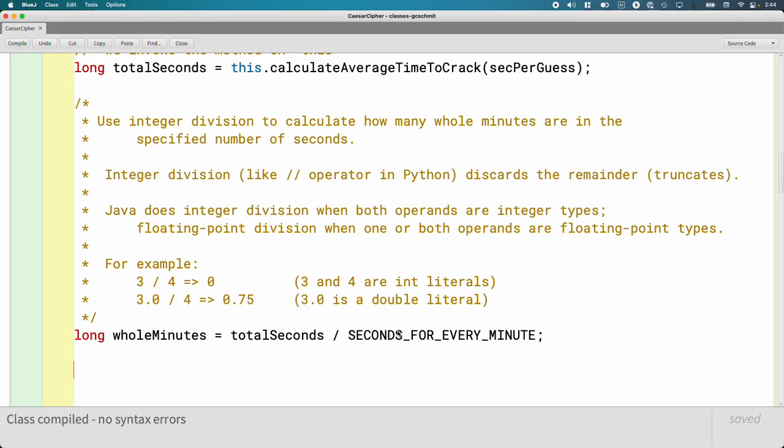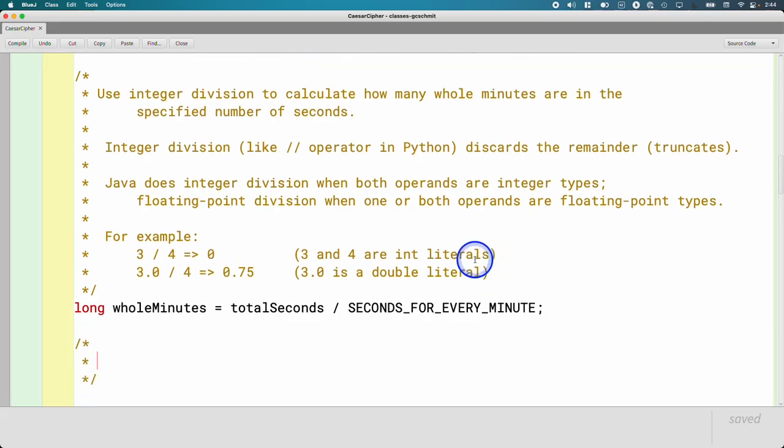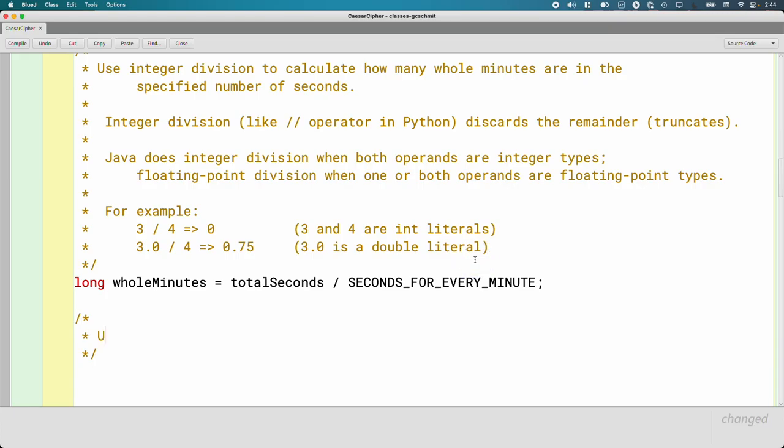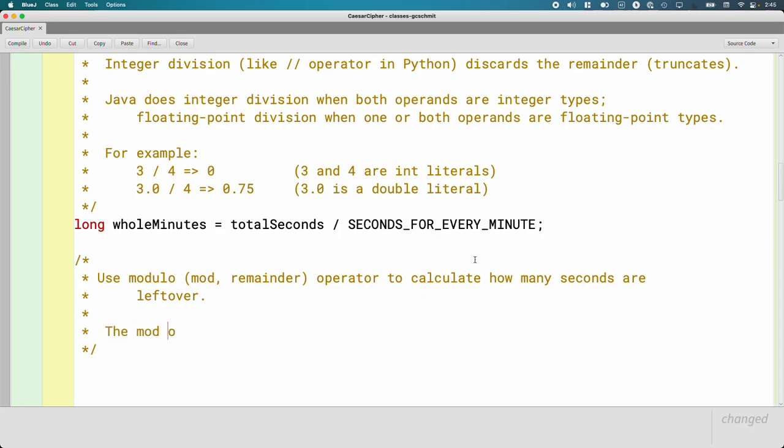If we had 130 seconds, we want to report back to the user that it's 2 minutes, but we want to say it's 2 minutes and 10 seconds. We also need how many leftover seconds we have. That's where we're going to use this new operator called the modulo operator. The mod operator uses this symbol, the percent symbol, and it returns the remainder of the division operation.